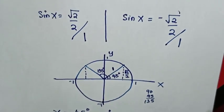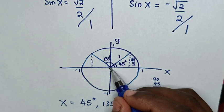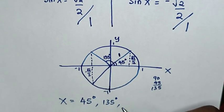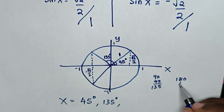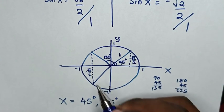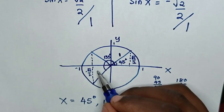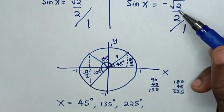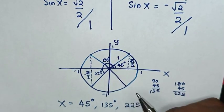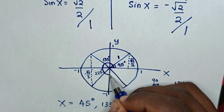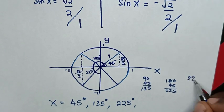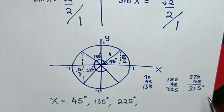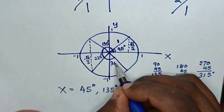For sine x equal to negative square root of 2 over 2, the opposite is below the x-axis. Starting from 0, that gives 180 plus 45 equals 225 degrees. Another angle with opposite equal to negative square root of 2 over 2 is at 270 degrees plus 45 degrees, giving 315 degrees.